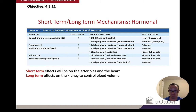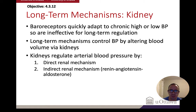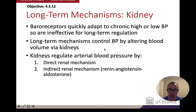Longer-term effects require a change in blood volume. You change blood volume by changing the amount of water in your system, and that falls on the kidney, which is responsible for urine output. Baroreceptors, for example, will tire over time — they adapt to chronic high or low blood pressure and will be ineffective for long-term regulation. So longer-term mechanisms are all about controlling the volume of blood, which is dealt with by the kidneys.